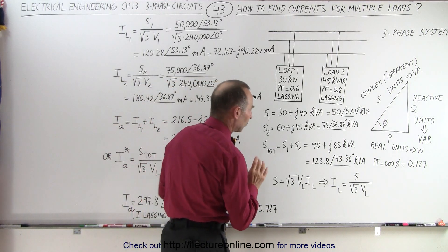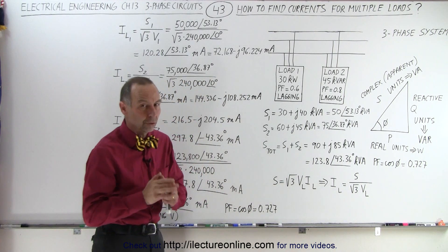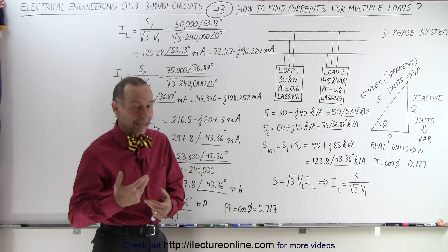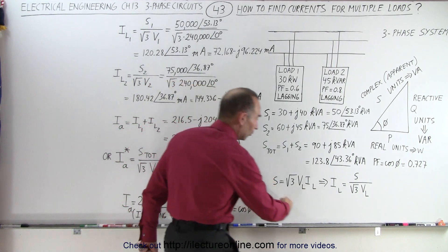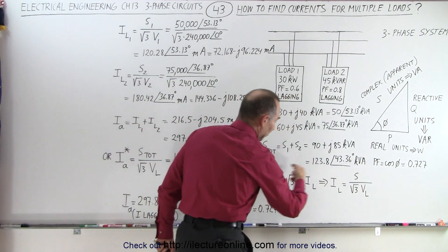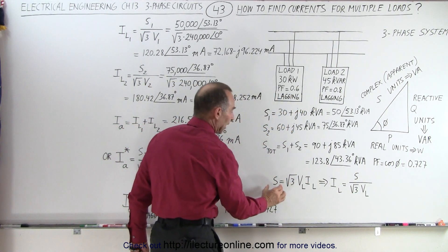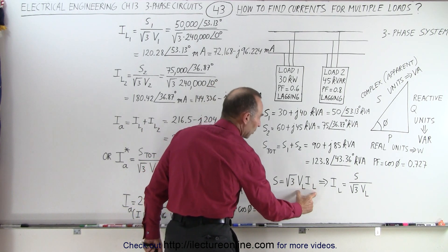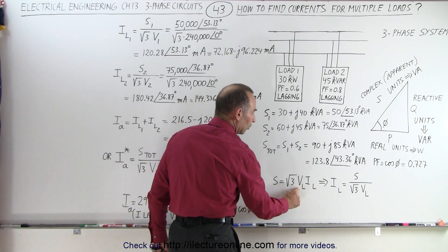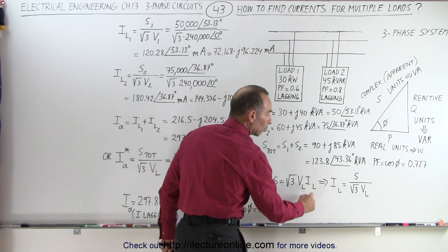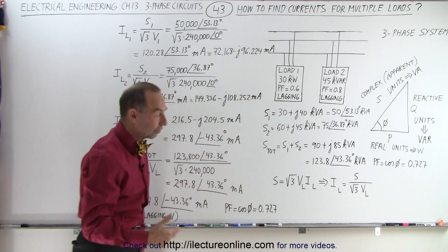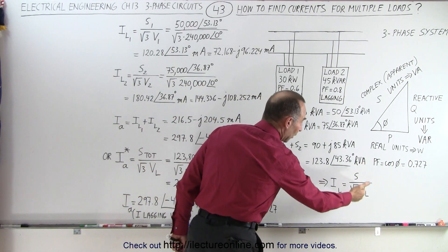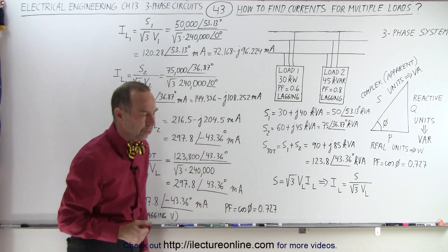Now we're going to try to find the currents — the line current — and we're going to start with simply the current on line A. We're going to use the same equation we've seen before: the complex power is equal to the square root of three times the product of the line voltage and the line current. We can solve that for the line current, and there's the equation we're going to use.